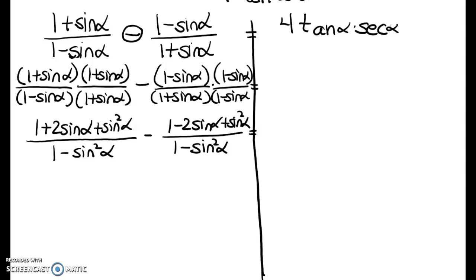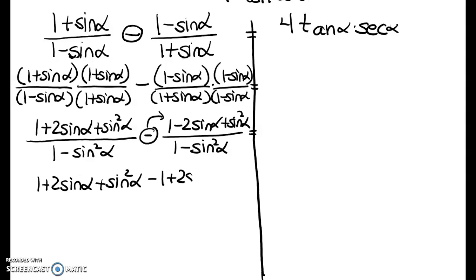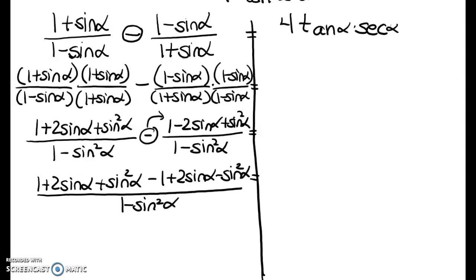Let's combine this into one fraction — I have to remember to distribute that negative in front to all the terms in the second fraction. When I do that, I get minus 1 plus 2 sine alpha minus sine squared alpha, and everything is still all over 1 minus sine squared alpha.